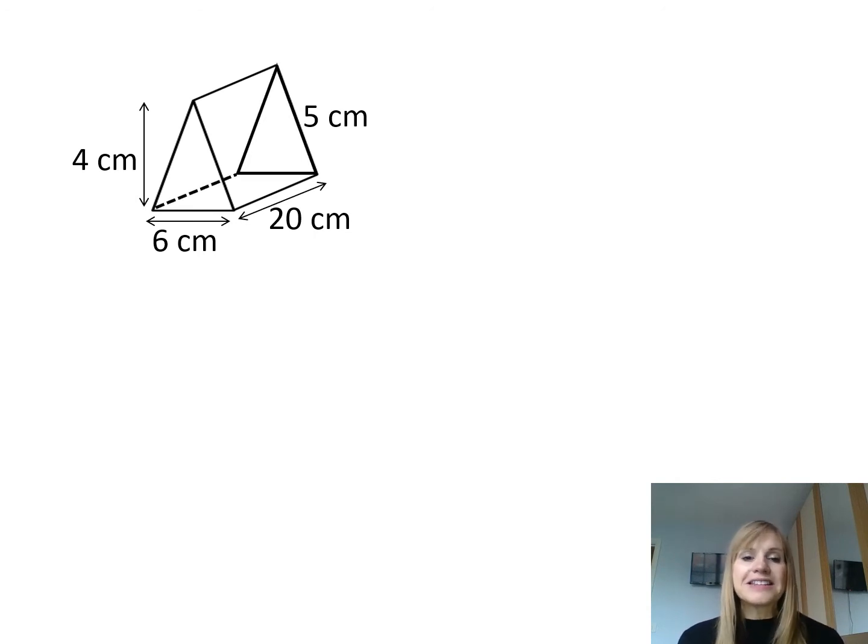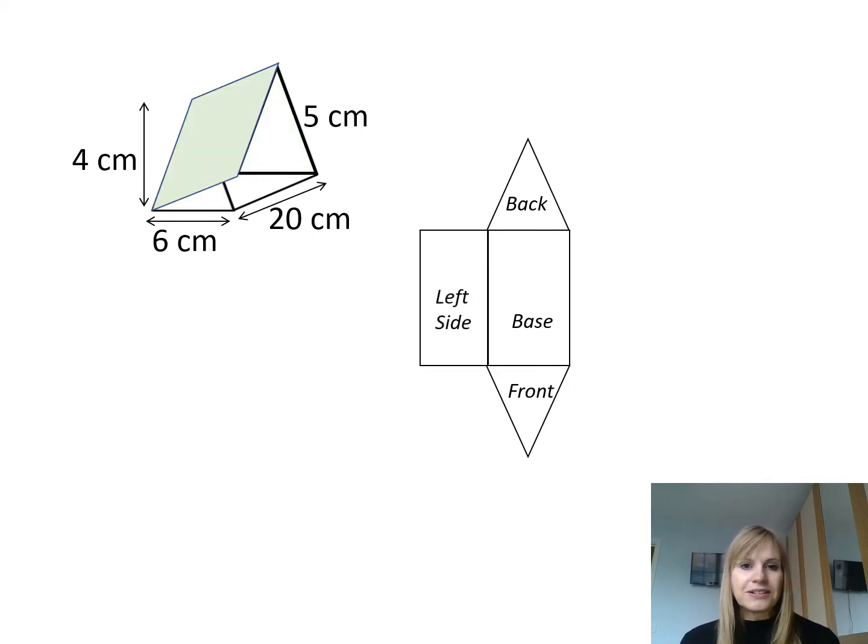Okay, so now I can see that the base of my triangular prism is a rectangle, and then coming off the base I have a triangle front and back, and then the two sides are also rectangles, so I have a left-hand side rectangle and I have a right-hand side rectangle.